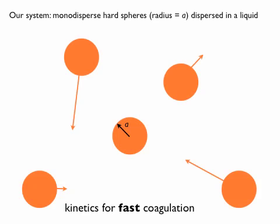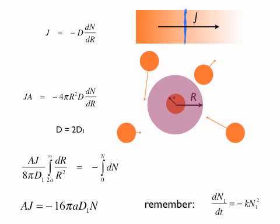Then the kinetics for fast coagulation—standard collision theory would mean that if you bump, you stick. There is no barrier, so the success rate if you hit the central particle is 100% for sticking.